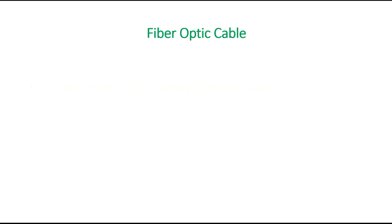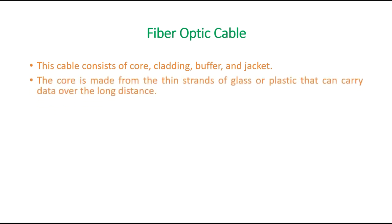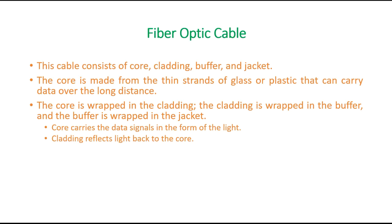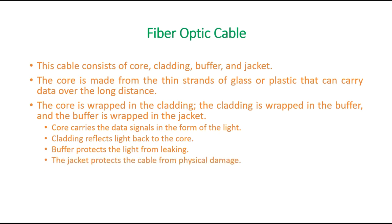Finally, fiber optic cable consists of four parts: core, cladding, buffer, and jacket. The core is made from thin strands of glass or plastic that can carry data over long distances. The cladding wraps around the core, the buffer wraps the cladding, and the jacket is the outermost layer. The core carries data signals in the form of light. Cladding reflects light back to the core. The buffer protects against light leaking, and the jacket protects the cable from physical damage.